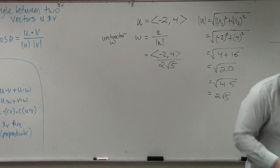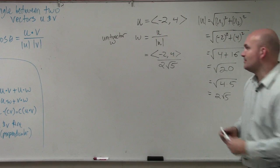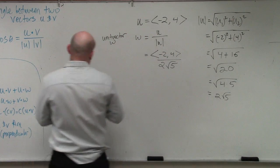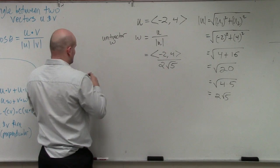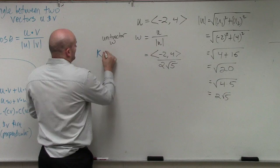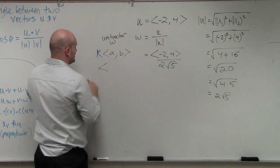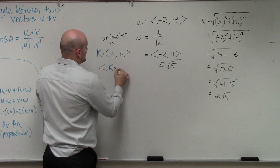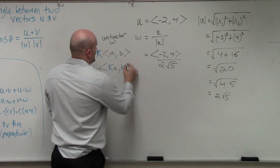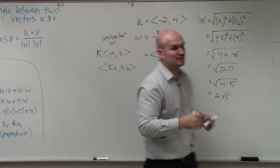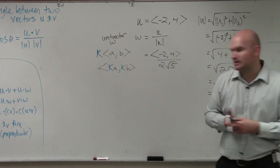OK? Now, what we learned last class period was something about scalars. If I had a scalar k outside of a vector a comma b, that scalar gets multiplied to both of my terms inside. Everybody agree with that? Yes. That was our scalar definition that was in your notes.